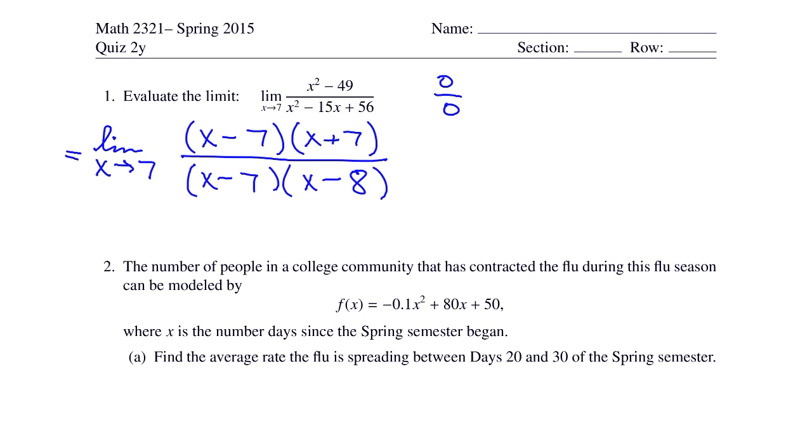Here we have the same factor, x minus 7. That cancels. That leaves me with the limit as x goes to 7 of x plus 7 over x minus 8. Now we can evaluate the limit because we don't have 0 on the bottom anymore. So that's 7 plus 7 over 7 minus 8, which is negative 14.